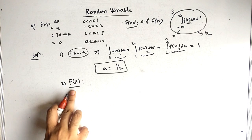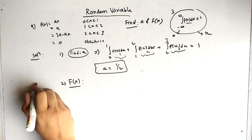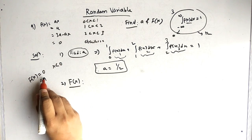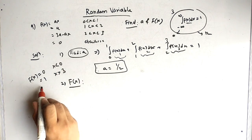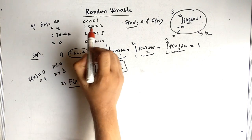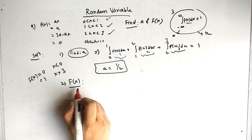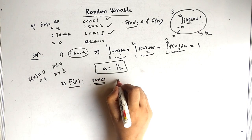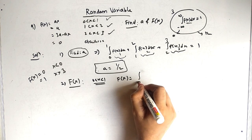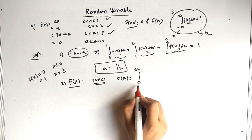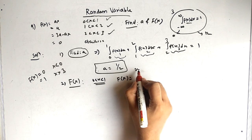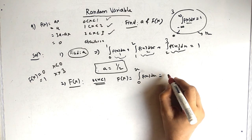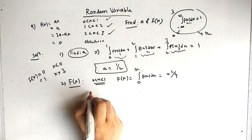For capital F(x): when x is less than 0, F(x) = 0. When x is greater than 3, F(x) = 1. For the first domain, x in [0,1]: F(x) = integral from 0 to x of f(x) dx, because the lowest limit is 0. The formula gives us x squared divided by 4.